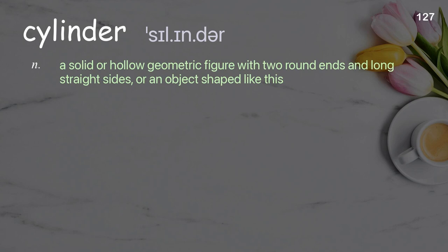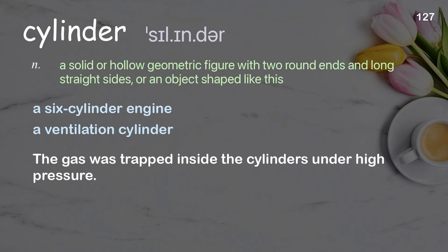Cylinder: a solid or hollow geometric figure with two round ends and long straight sides, or an object shaped like this. Examples: a six-cylinder engine, a ventilation cylinder. The gas was trapped inside the cylinders under high pressure.